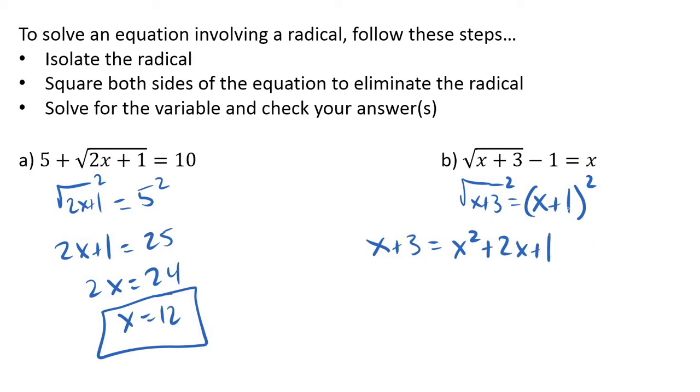When you square this side, you have to multiply it out, so we now get x plus 3 equals x squared plus 2x plus 1. Don't make a silly mistake here and just say x squared plus 1. It's x plus 1 times x plus 1, so you're going to get that middle term.